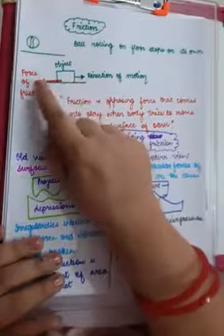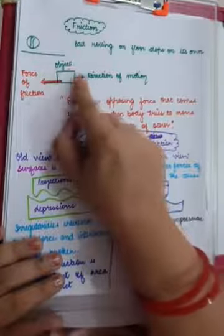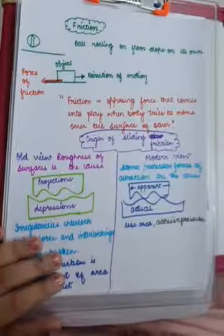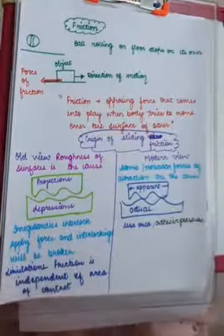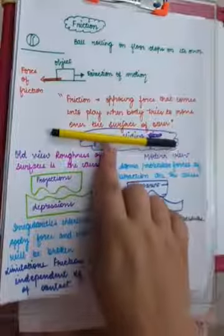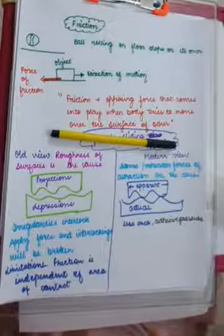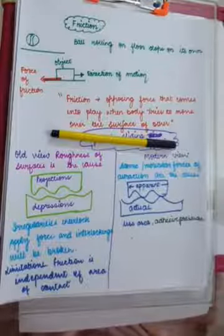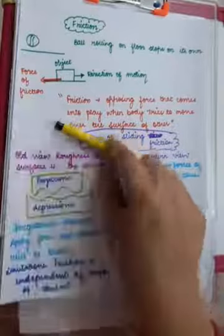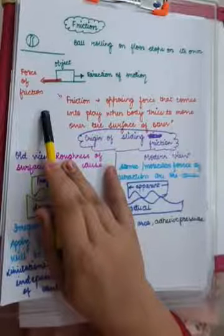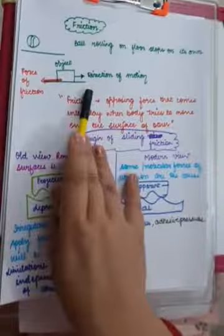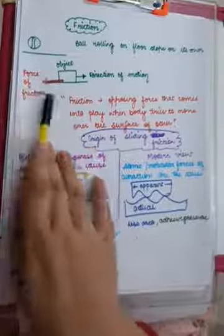Suppose you have a block here which is kept on a horizontal surface. Suppose you are trying to move this block in this direction. So this is the direction of motion. If I apply a very small force, the things don't move. But I am applying the force. So where is that force going? That force is being balanced by one natural force which is called force of friction.